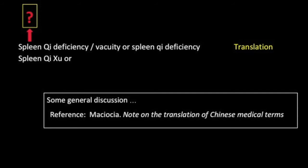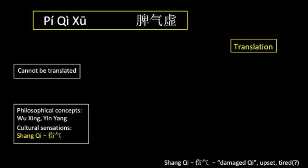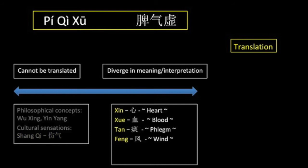Macioccia states that Chinese medicine terms are essentially impossible to translate. I would not fully agree with that statement. Philosophical notions such as wuxing and yinyang, and words related to culture, certainly can't be translated and require extensive explanation. Descriptions of certain sensations also defy translation — for example, the sensation shang qi can only be understood by reference to Chinese culture and medicine, and patients frequently report it to an examining doctor to influence diagnosis. A number of TCM terms diverge from our contemporary understanding in English: the TCM heart and spleen are viewed differently, and Chinese notions of blood, phlegm, and wind have a much more complex meaning.